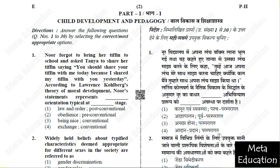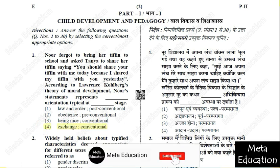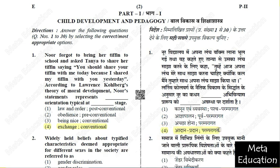The correct answer is option 4: Exchange, conventional — 'Adhan, pradhan, paramparagat.' Lawrence Kohlberg gave the Morality Principles. We have made a detailed Part 1 video explaining the pre-conventional, conventional, and post-conventional stages, including all sub-stages like law and order, obedience, and avoidance. A link is provided in the description below.